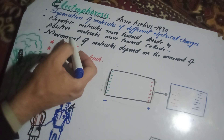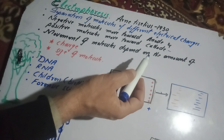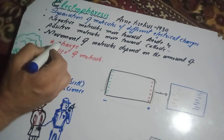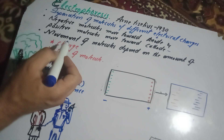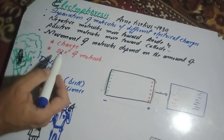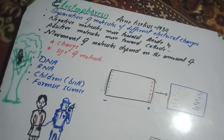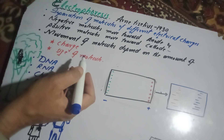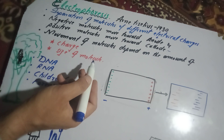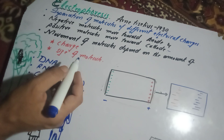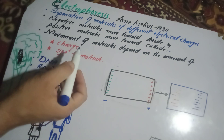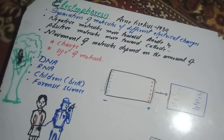The movement of molecules depends on two factors: the amount of charge on the molecule, and the size of the molecule. If the charge is greater, the movement is faster. If the charge is low, the movement is slower. If the size of the molecule is smaller, the movement is faster.